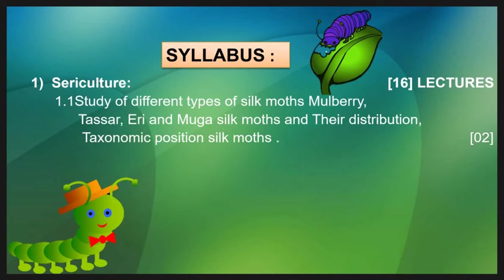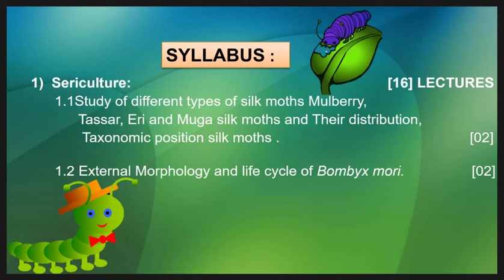In Topic 1.1, we will look at the different types of silkworm such as mulberry silkworm, tassar silkworm, eerie silkworm, and muga silkworm, and we will study their taxonomic position. Out of these, we will study the details of mulberry silkworm. In Topic 1.2, we will cover the external morphology and life cycle of mulberry silkworm, that is Bombyx mori.